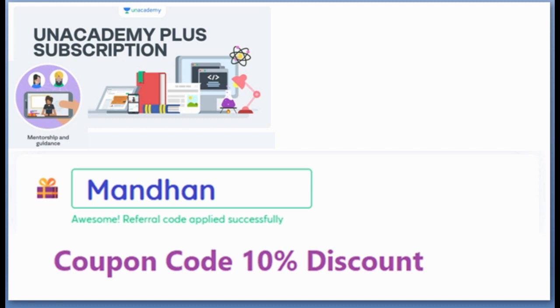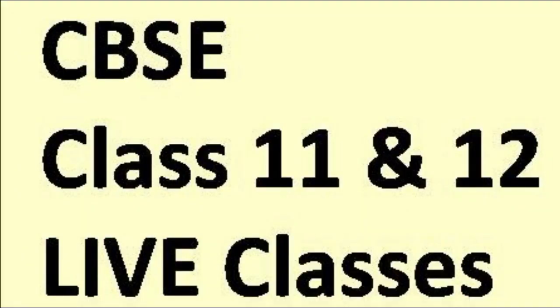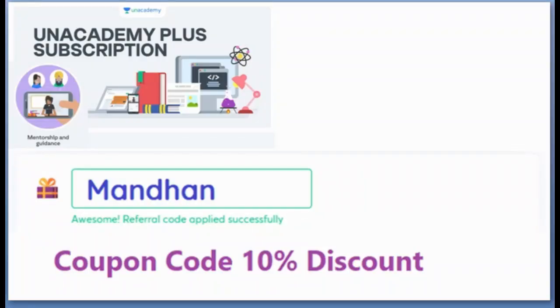Just download Unacademy app and get the Plus subscription by using the coupon code M-A-N-D-H-A-N. This coupon code you will use and you will get admission into Plus course.